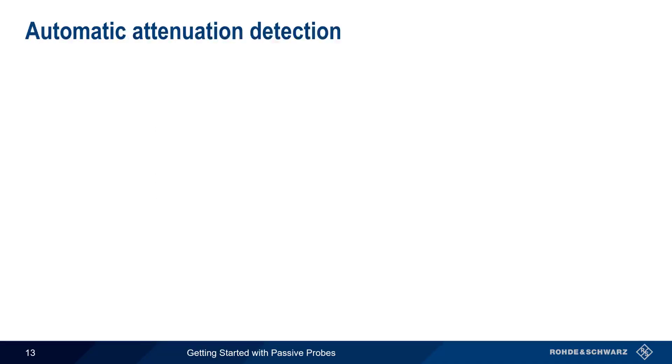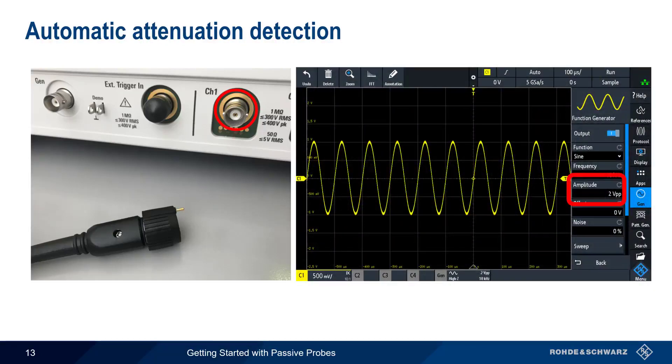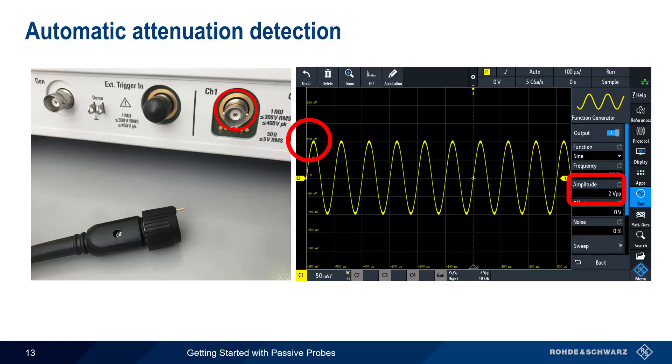One final topic we touched on earlier is automatic attenuation detection. Recall that 10x passive probes reduce, or attenuate, the signal level by a factor of 10. As mentioned earlier, a small pin on the scope end of the probe is sensed by a ring around the scope input, and this tells the scope that the measured signal level has been reduced by a factor of 10. For example, if we generate a 2 volt peak-to-peak sine wave and measure it with a 10x probe, we'll see a peak voltage of 1 volt if the 10x probe is properly detected, but only 100 millivolts if the probe attenuation is not automatically detected. It's especially important to be aware of this if you're using 10x probes from a different manufacturer, or if you're using probes that can be switched between 1x and 10x.